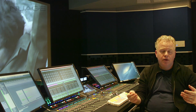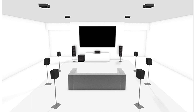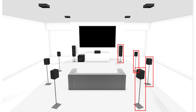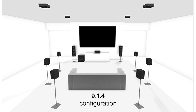Now if you're mixing for cinema, the minimum configuration is a 9.1.4. It's basically the same speaker configuration, with the addition of two channels in the horizontal plane: a left wide and a right wide. So going from the front, you would have a left speaker, a left wide speaker, then the left side surround, then the left rear surround — the same thing on the right hand side — one low frequency effects channel, and the four ceiling channels. That is a 9.1.4 configuration.